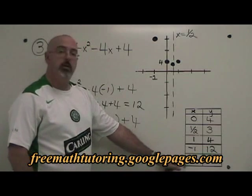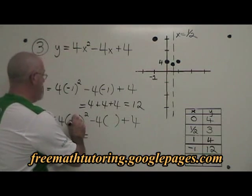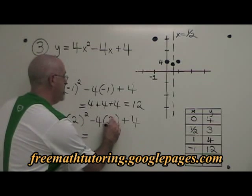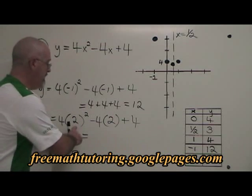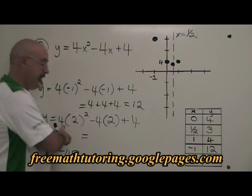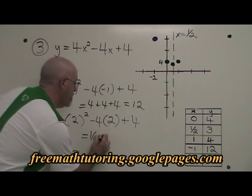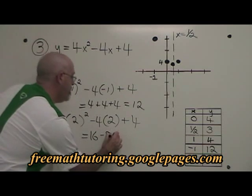When I plug x equals 2 into the equation, I get 4 times 2 squared minus 4 times 2 plus 4. 2 squared is 4 times this 4 is 16. Minus 4 times 2 is minus 8 and then I have this plus 4.